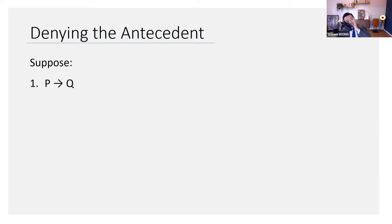Suppose we have P entails Q. What's the antecedent here? Well, the antecedent is the P, and so if you're saying you're denying the antecedent, what you're saying is not P.